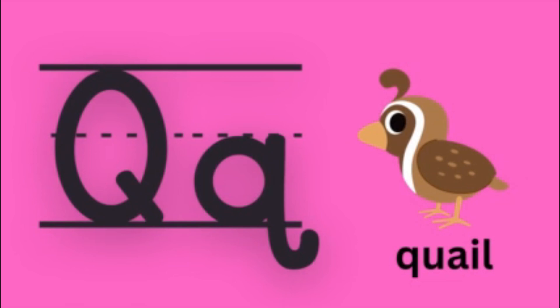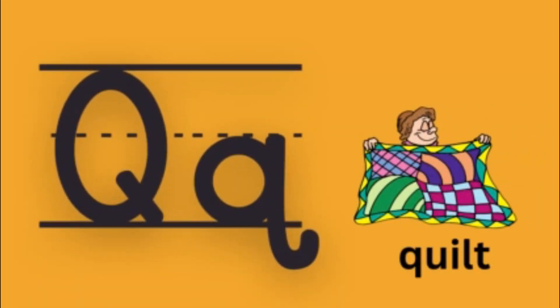Next, Q for Quail. Q for Quail. Come on children, say along with me — Q for Quail. Q for Quail. Q for Quail. Correct! Next, Q for Quilt. Q for Quilt.